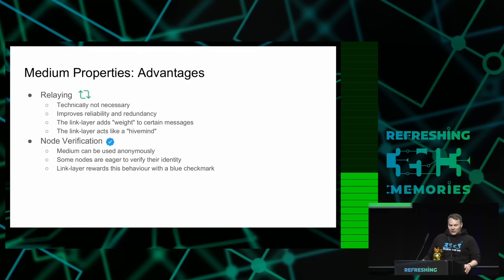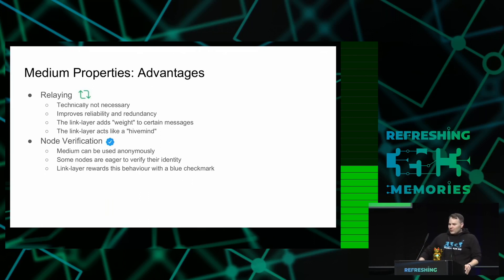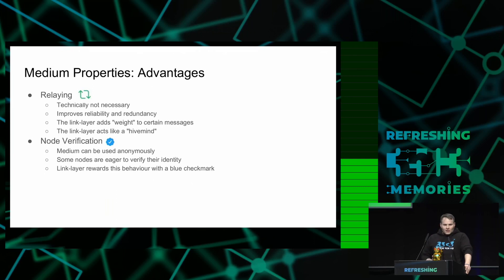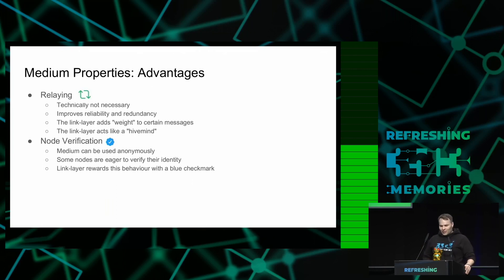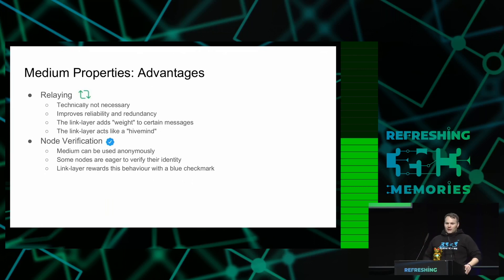We don't have to change many things there. A little bit about the medium — it has properties that are advantageous to us and there are some challenges. Let's talk first about the good parts. The medium has relaying; it's technically not necessary, but it adds a certain weight to certain IP datagrams. Basically the link layer has a hive mind and can mark messages that are very important to more nodes in the network by relaying them. Some nodes in the network also strive for authentication, actively giving up their anonymity — this is what we call node verification, and it is marked on the link layer with a blue check mark.